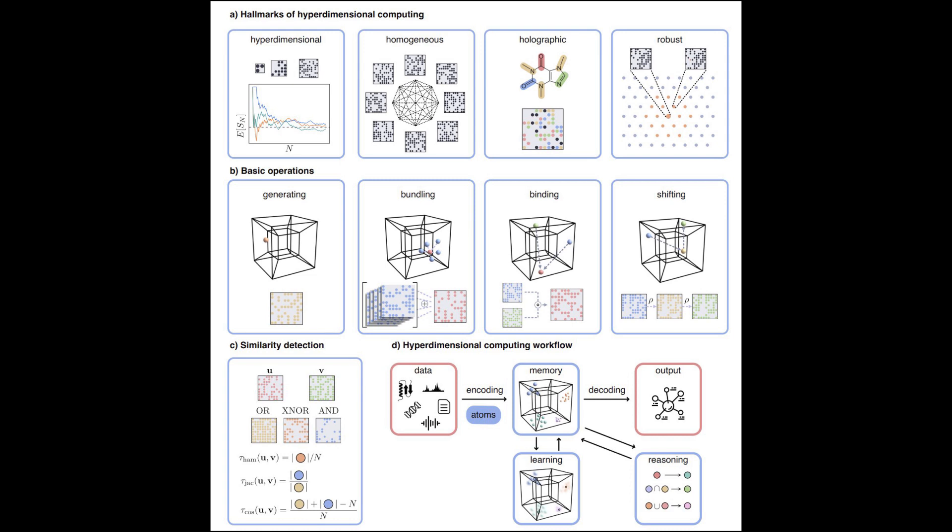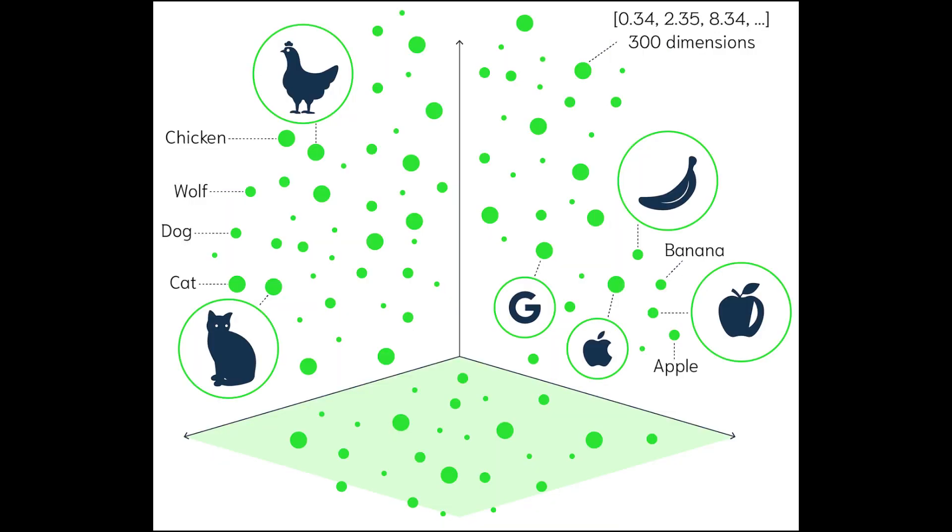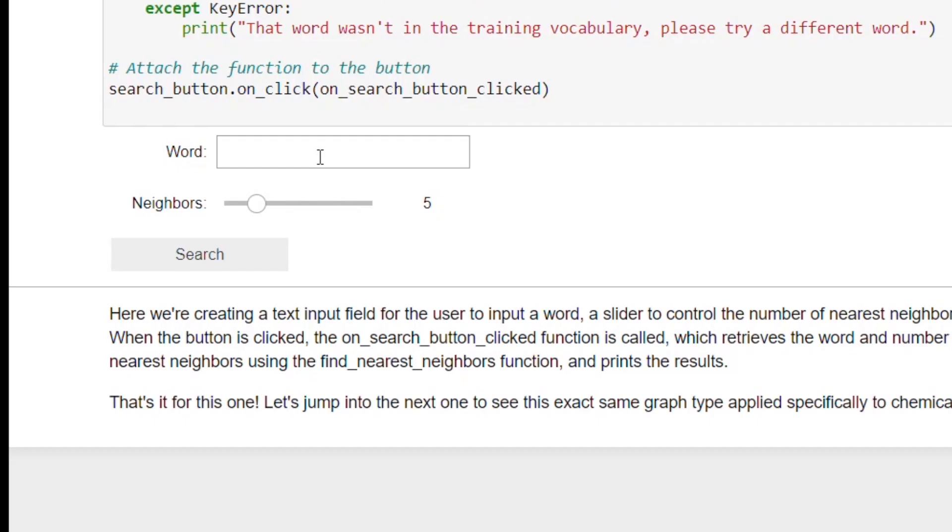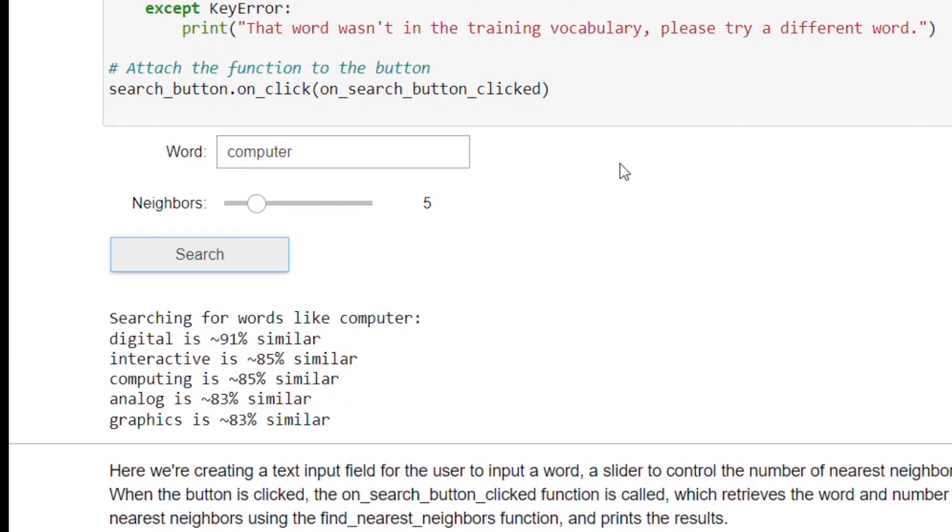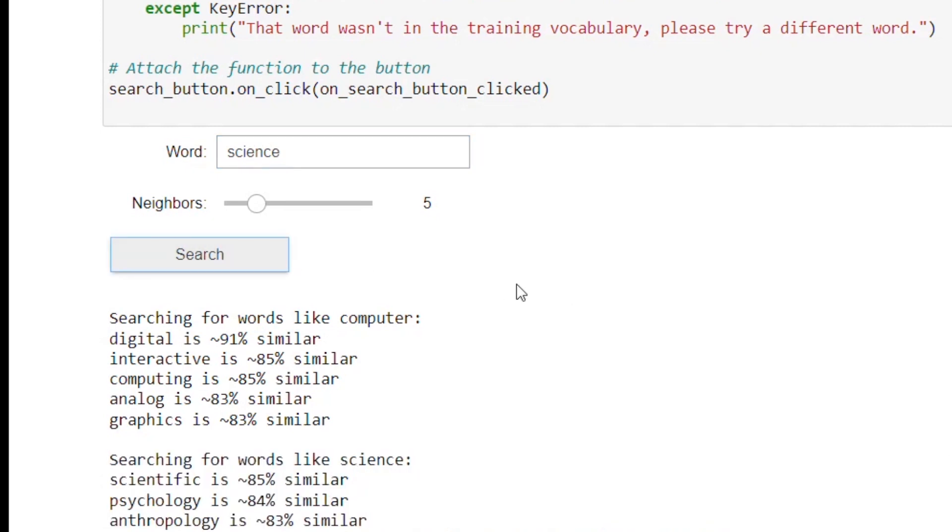One of the powerful features of hyperdimensional computing is similarity-based retrieval. Because the high dimensional vectors preserve semantic relationships, you can easily compare vectors using a simple similarity metric, like cosine similarity. This allows you to quickly find similar or related data points, even in a vast sea of information.